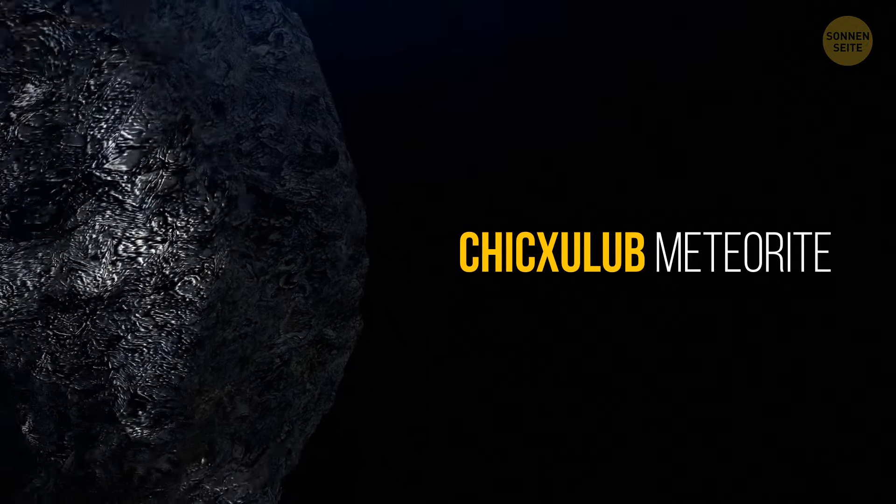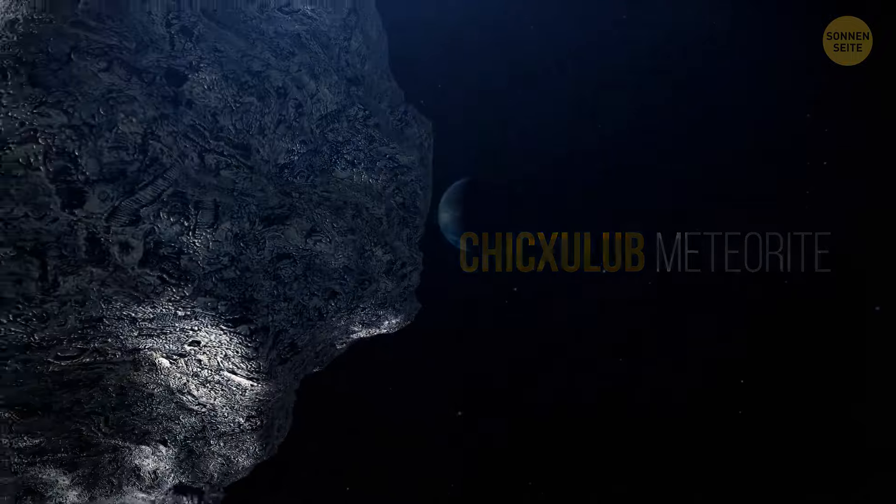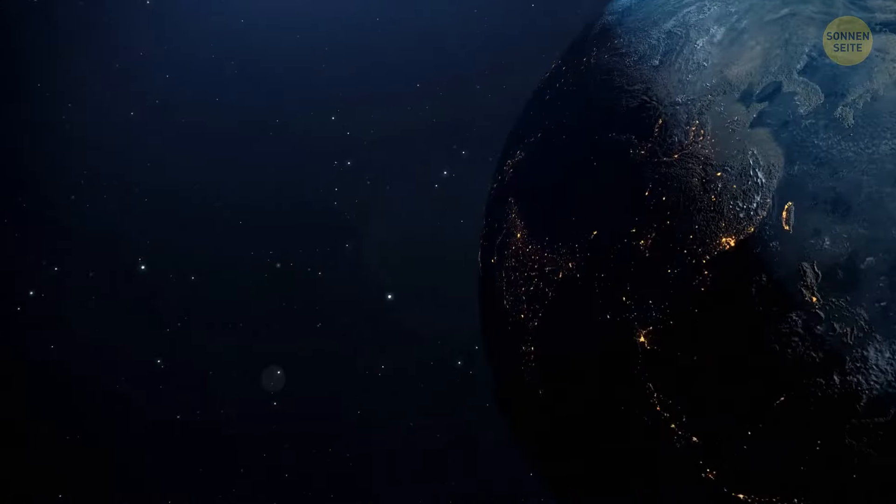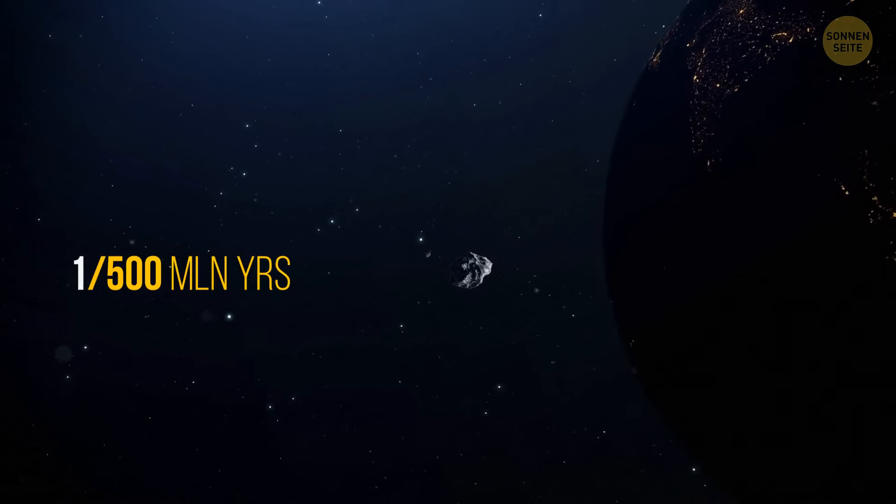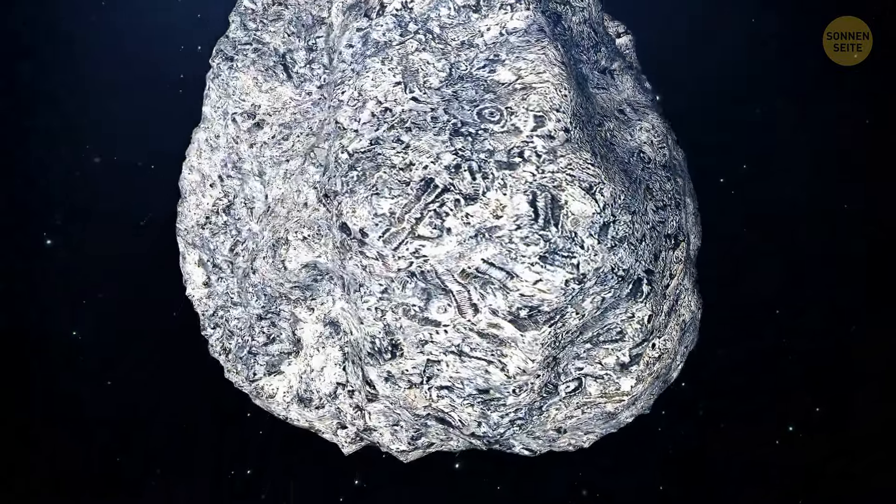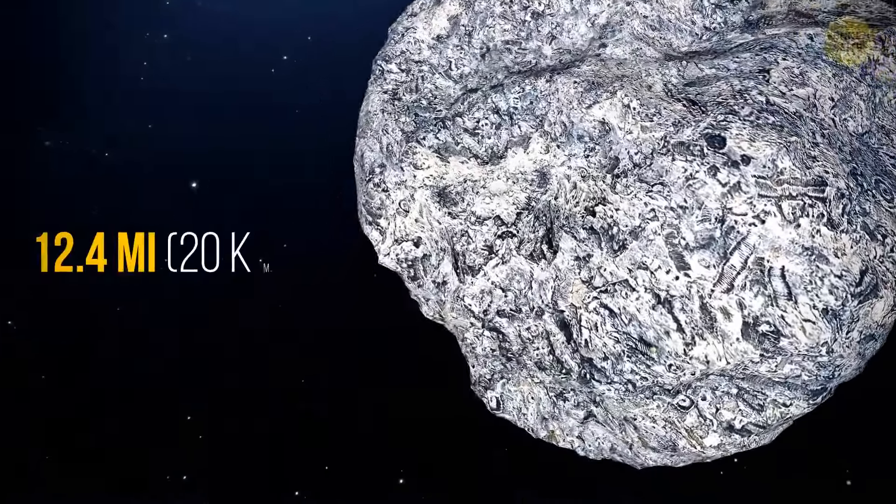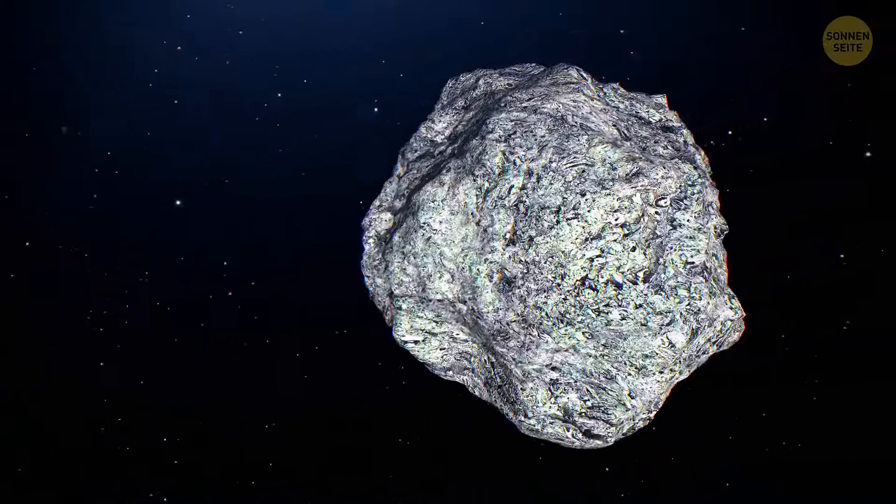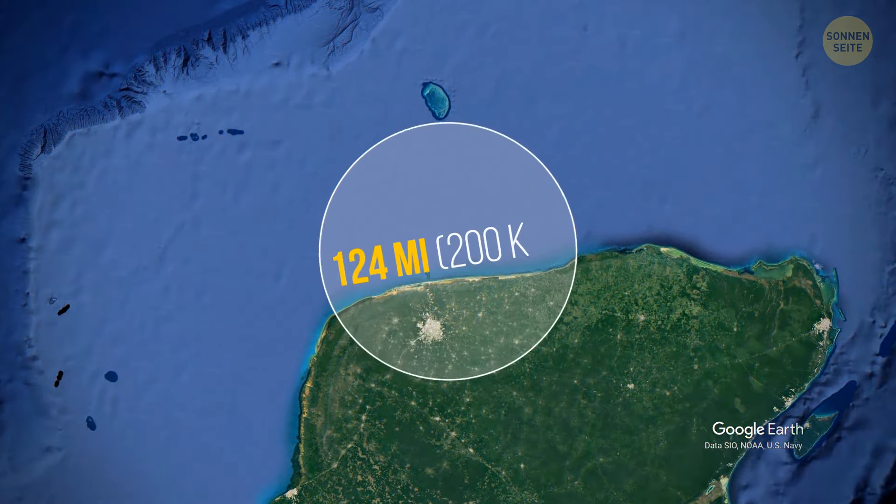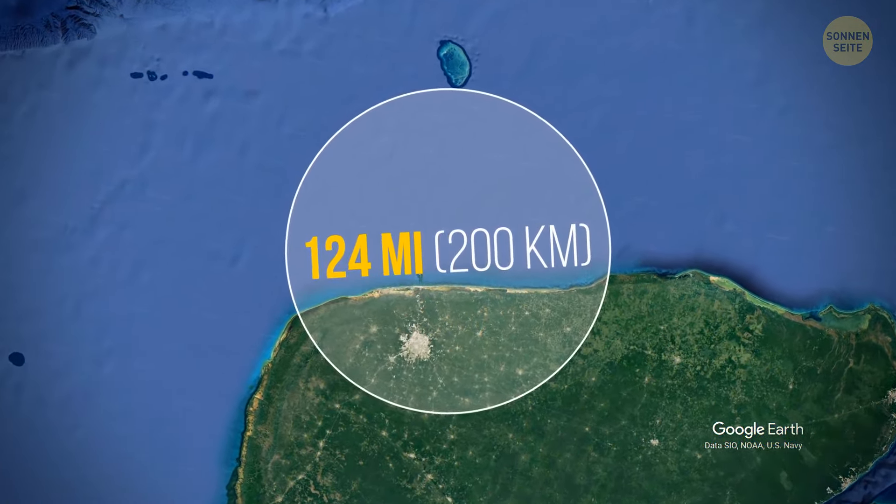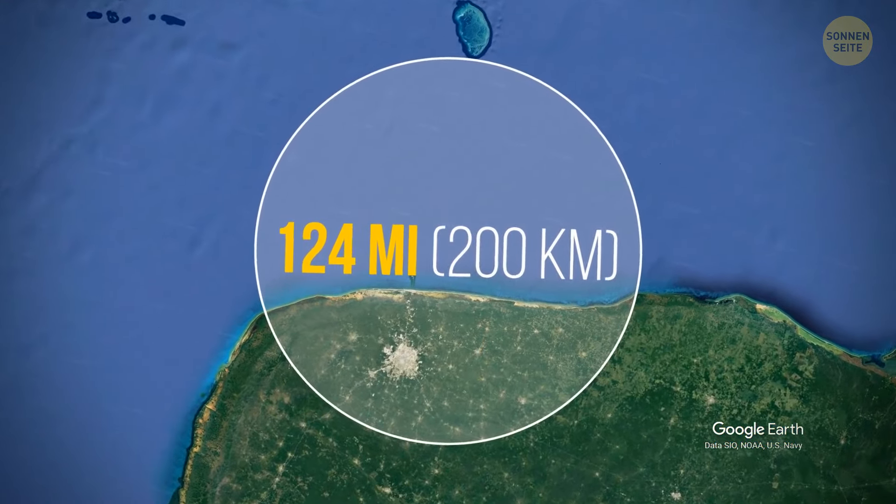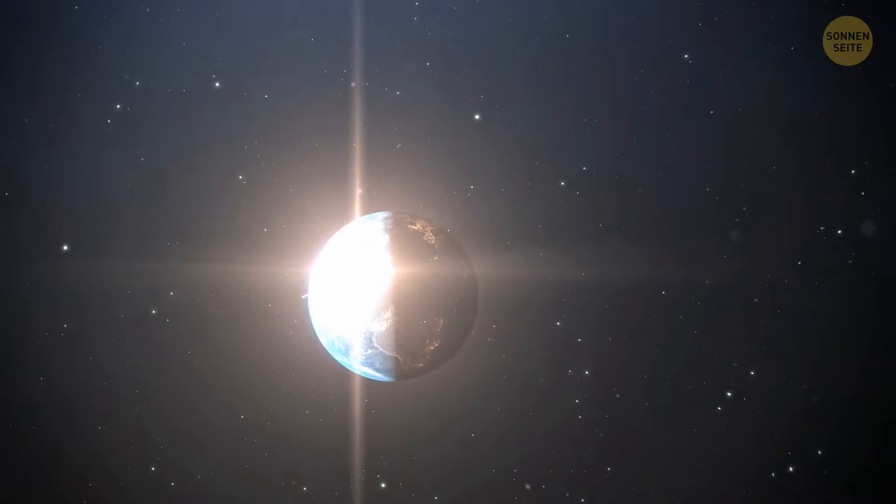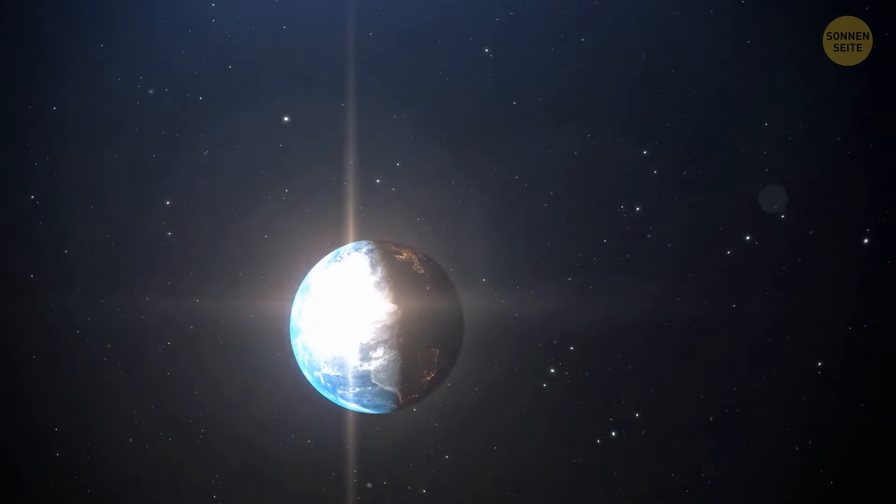Chicxulub meteorite, the thing that wiped the dinosaurs off the face of the Earth. This happened about 66 million years ago. These collisions in general happen about every 500 million years. The height of the Chicxulub meteorite was 12.4 miles. It's so high that when it touched the ground, it could reach the stratosphere. Even looking at the 124-mile diameter crater left by this meteorite, you can understand how huge it was.